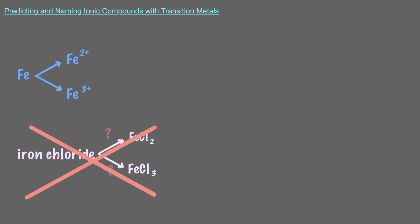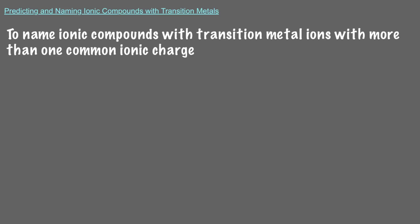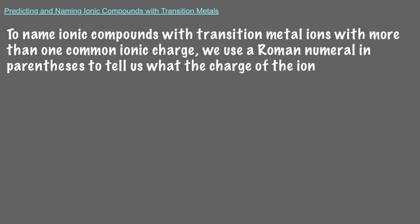So how do we know which of the two iron cations we have in an ionic compound? Well, there's an additional nomenclature rule for metals that make more than one cation, like transition metals, that help us distinguish them. When we go to name ionic compounds of these elements, ones with transition metal ions with more than one common ionic charge, we use a roman numeral in parentheses to tell us what the charge of the ion is.